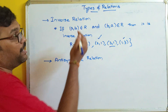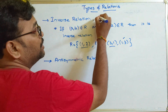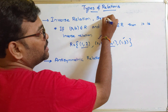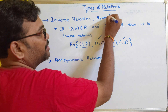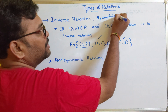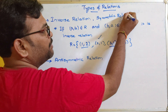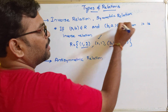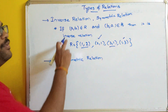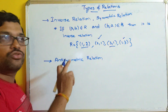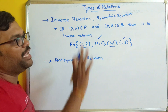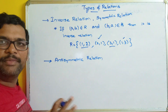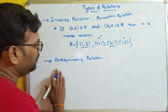This is also known as a symmetric relation. Symmetric relation means if (A,B) belongs to R and (B,A) also belongs to R, then it is called a symmetric relation.